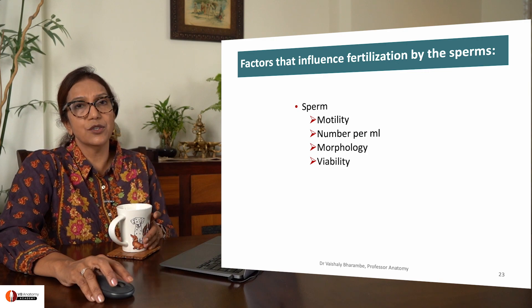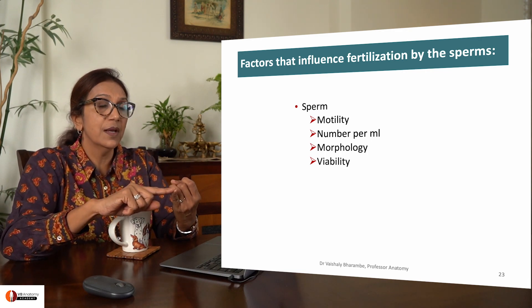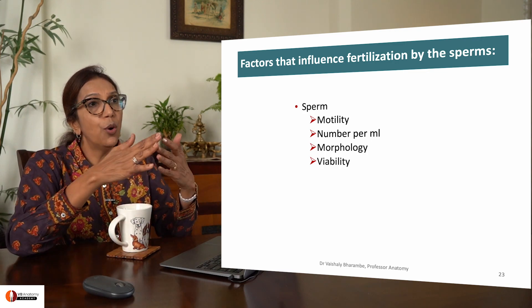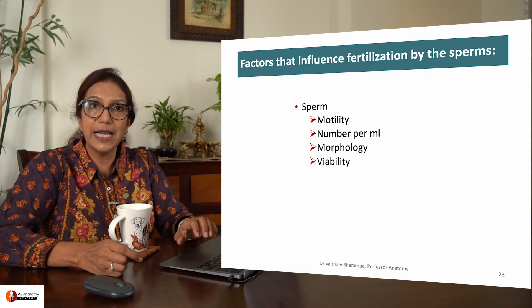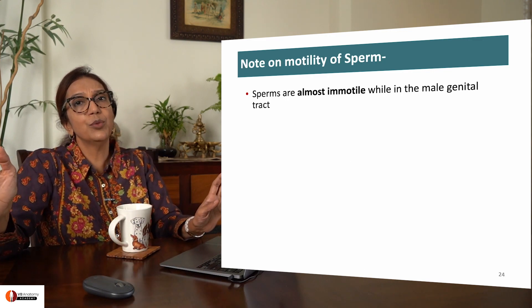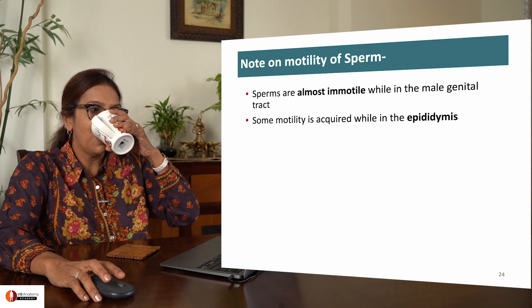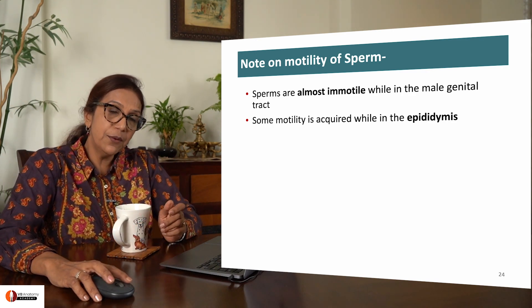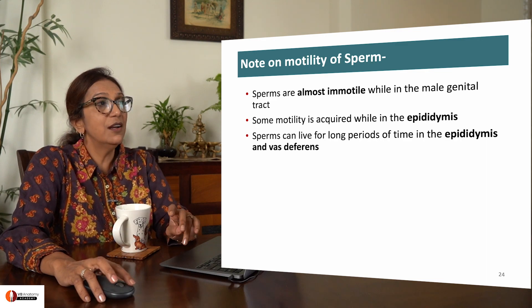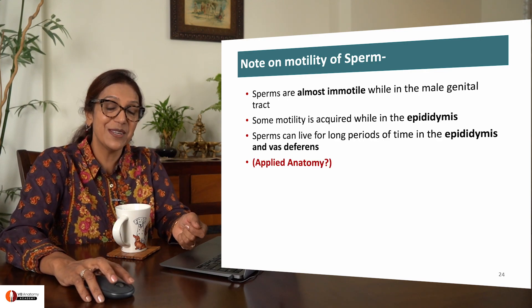But many factors will influence fertilization. How motile is the sperm? How many sperms are there per ml? What is the morphology? What is the viability? All these affect fertilization. Sperms are almost immortal in the male genital tract — a little motility may be acquired through the epididymis, and they can live for long periods in the epididymis and vas deferens.